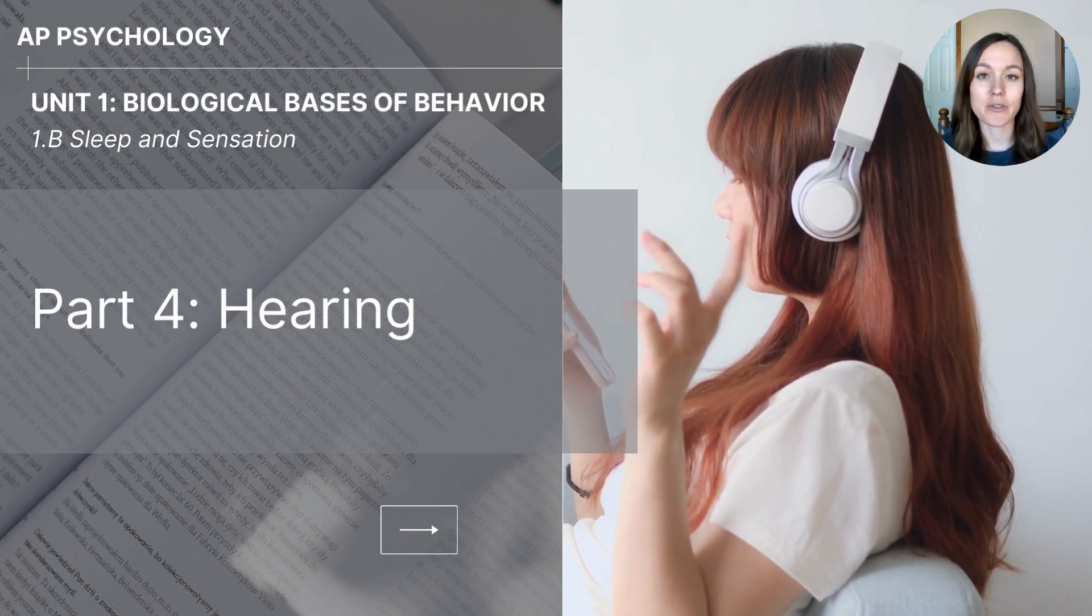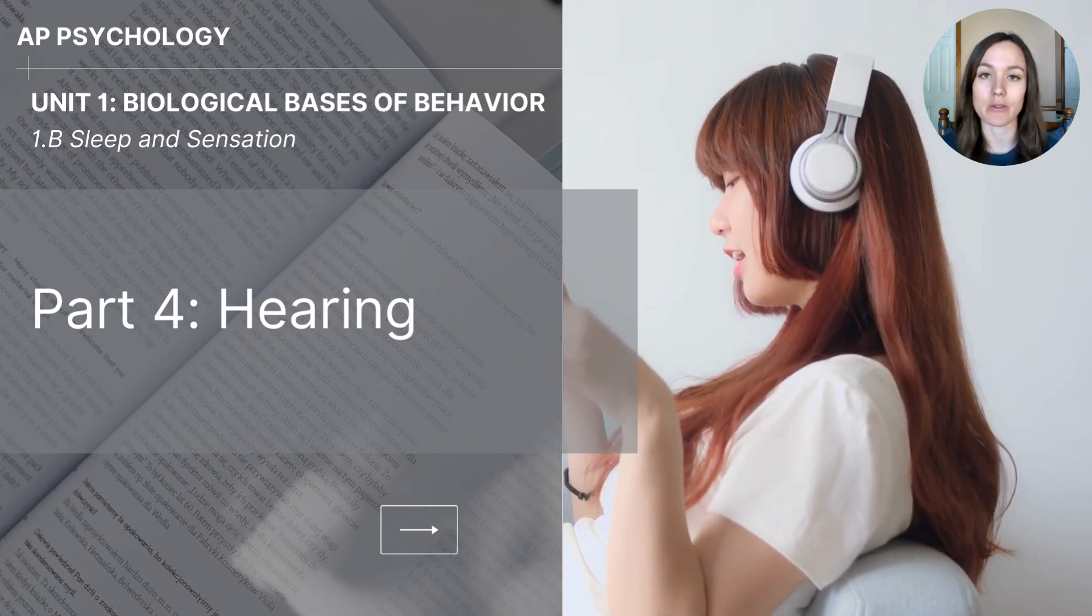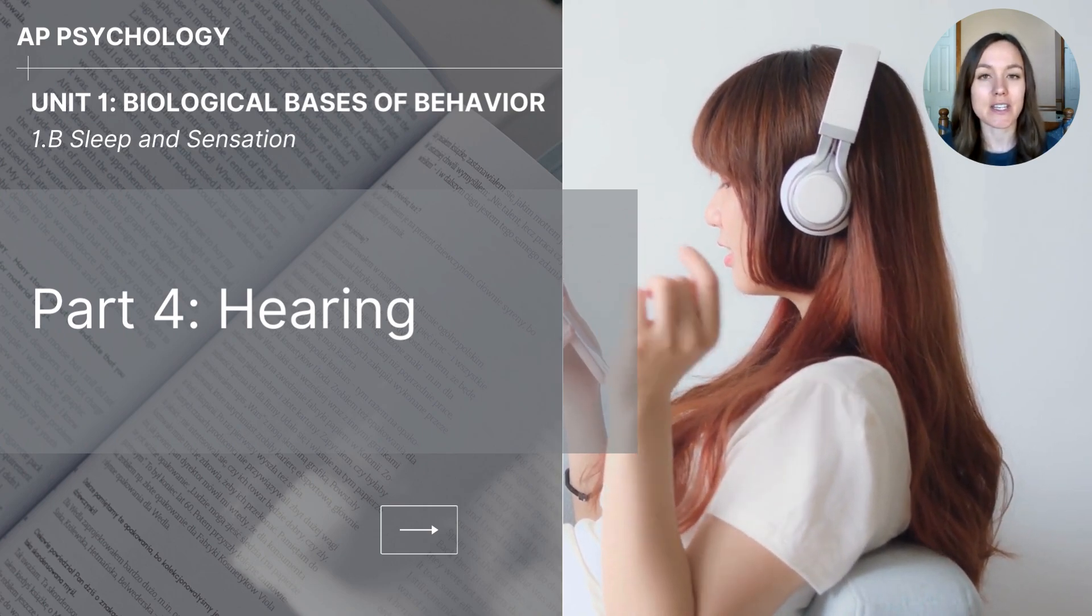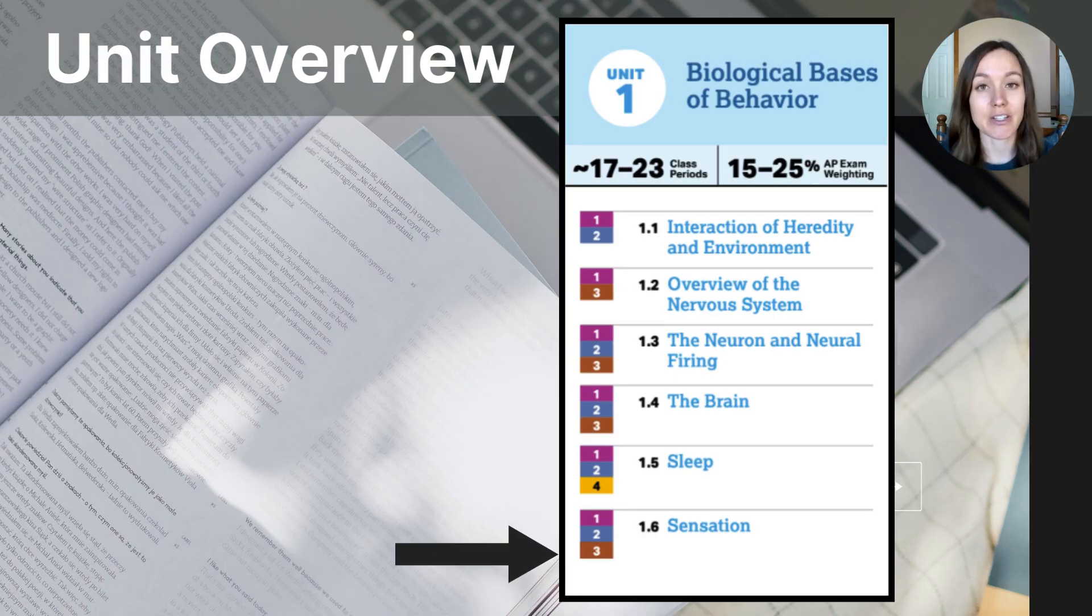Hi everyone, this video is part four of the 1B series on sleep and sensation from the Biological Basis of Behavior unit for AP Psychology students. This video lesson will cover the ear and hearing. Judging by our unit outline, you can see that we are close to the end of unit one. Today our video comes from our section on sensation labeled 1.6 and our focus is hearing.